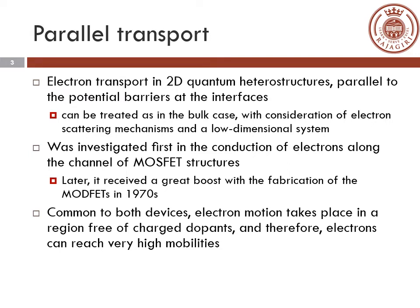Parallel transport was first investigated in conduction of electrons along the channel of MOSFET structures. Later it received a great boost with the fabrication of MOSFETs in the 1970s. For both devices, electron motion takes place in a region free of charged impurities, and therefore electrons can reach very high mobilities.